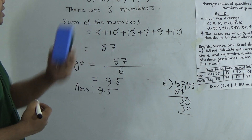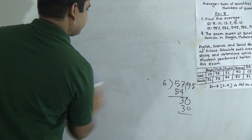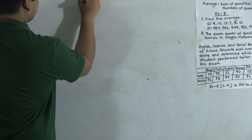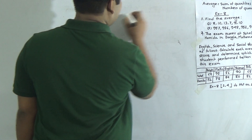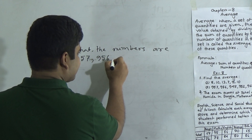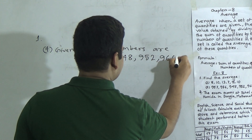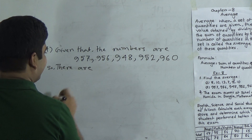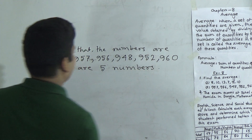Next we shall solve question number 4 of exercise 1. Given that the numbers are 957, 956, 948, 952 and 960. There are 5 numbers.